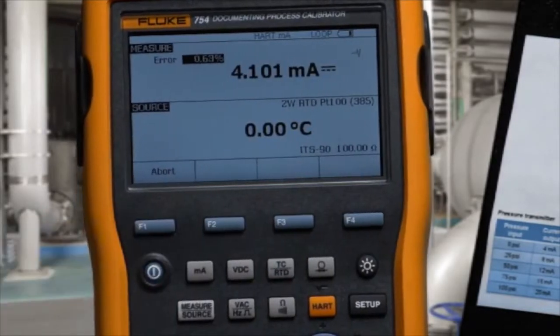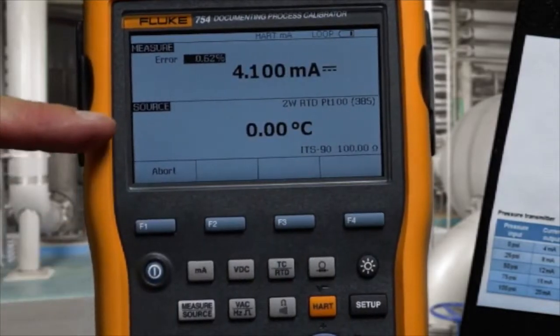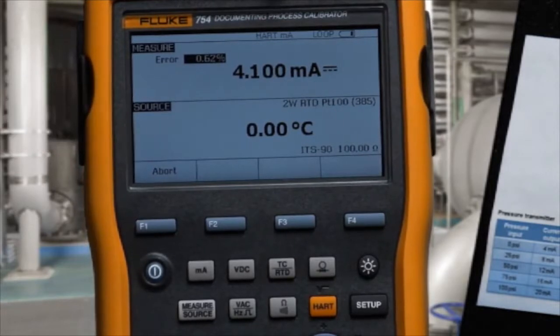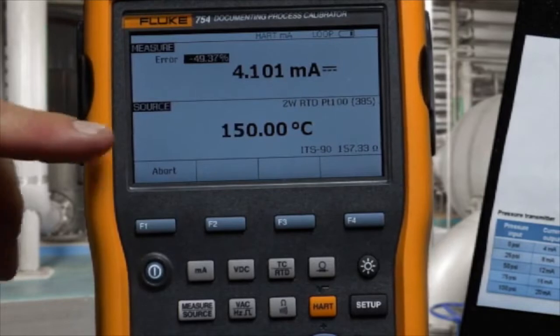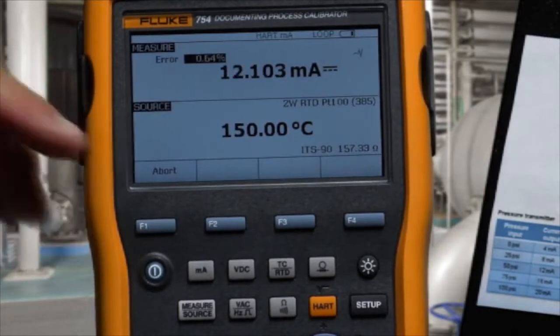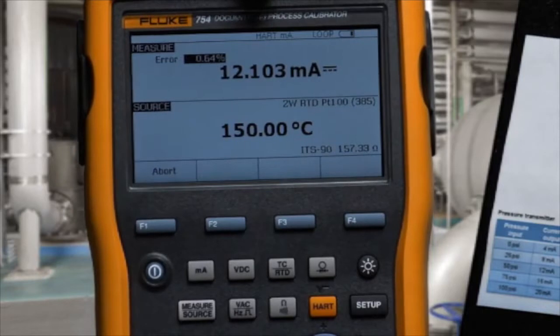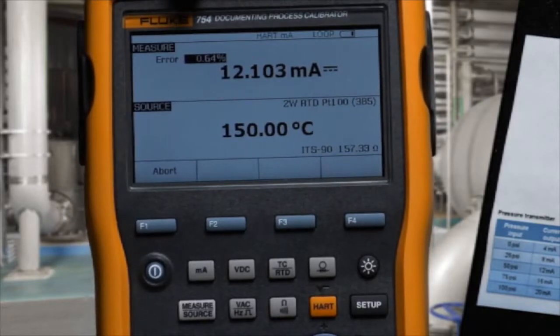An auto test to automatically document the applied temperature, the measured current, and the error percent of span. Next, the 50% value is applied, the 50% milliamp value is measured, and error percent of span is calculated.